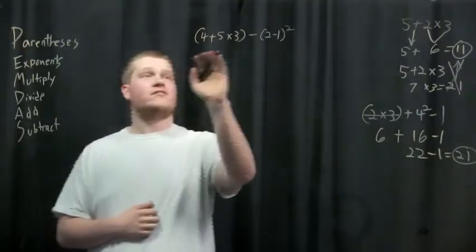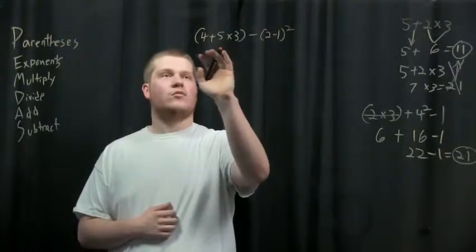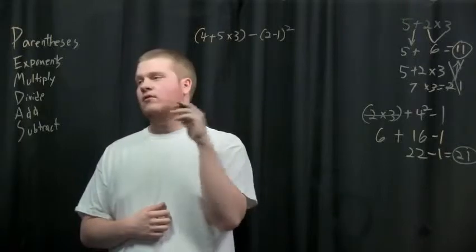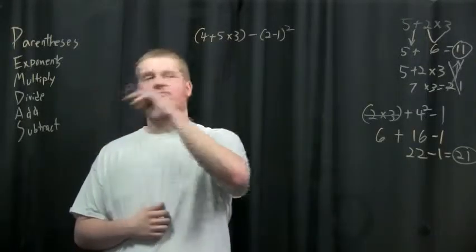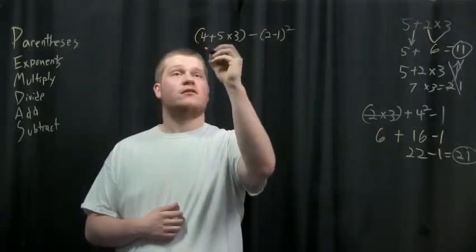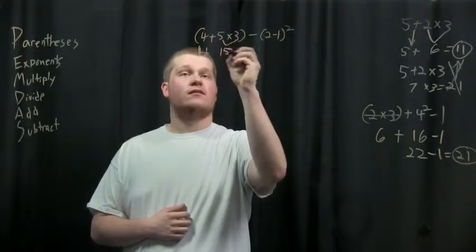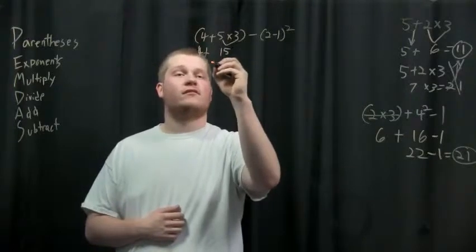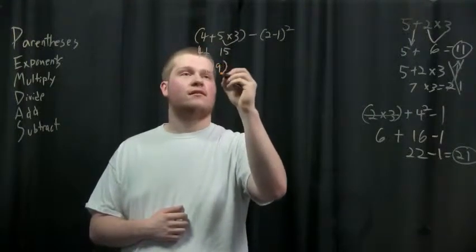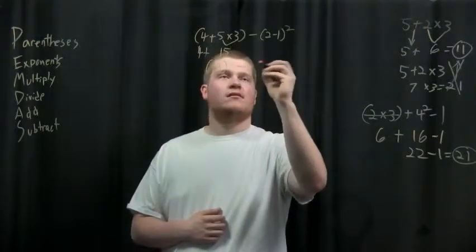In the first parentheses, there's multiplication and addition. You go down the PEMDAS order of operations and you do the multiplication first. So you're gonna bring this 4 and plus down, you're gonna do 5 × 3 is 15, and then you're gonna add 4 + 15. So then you have (19). You're gonna bring down that minus, and then you have 2 - 1.